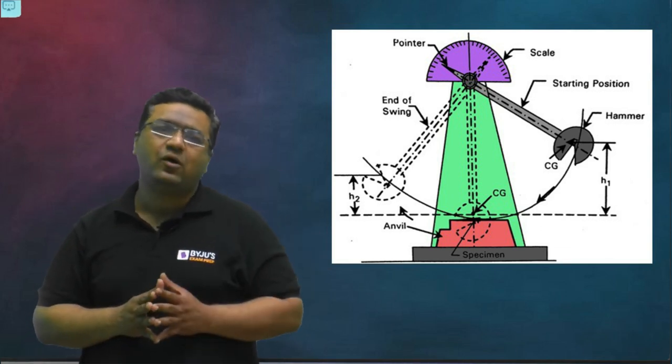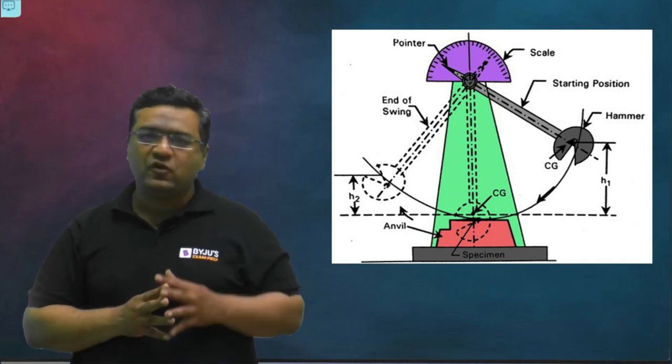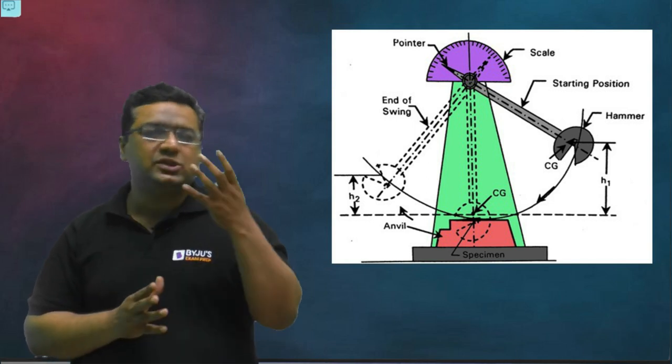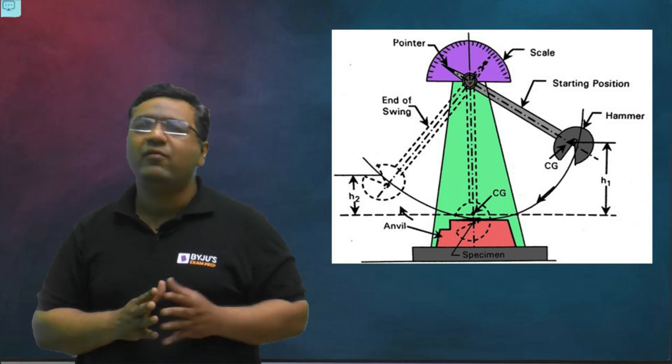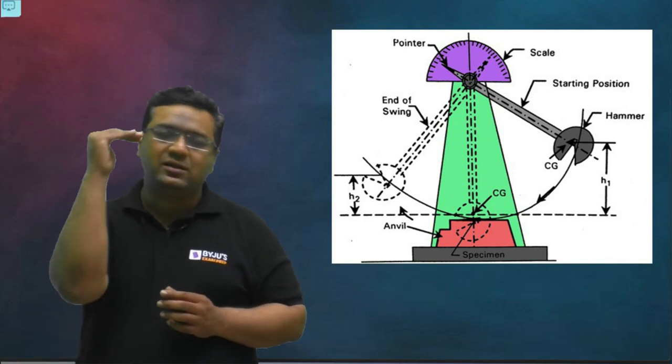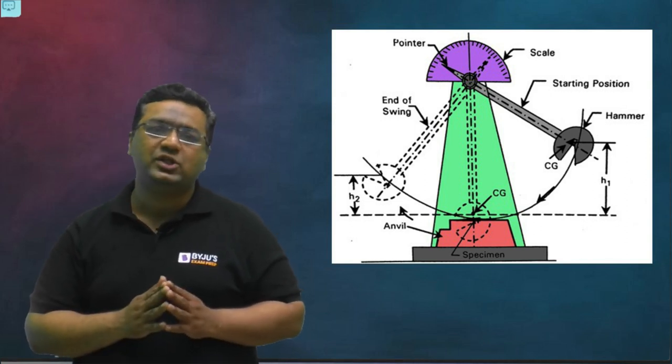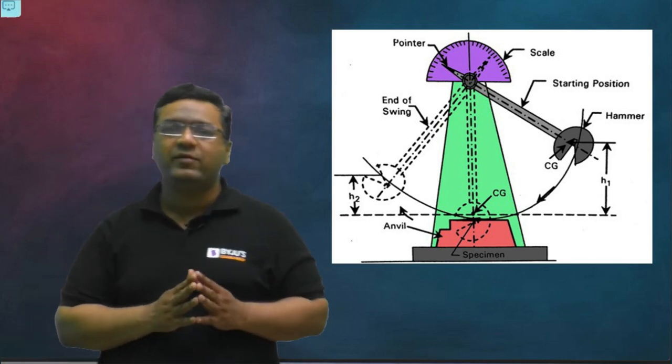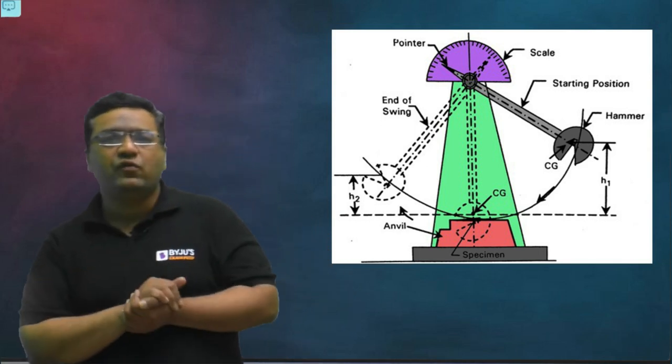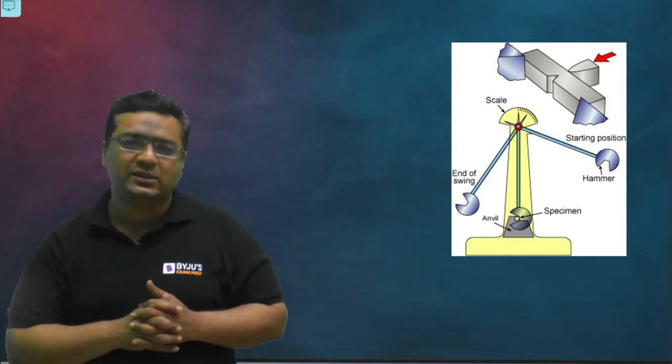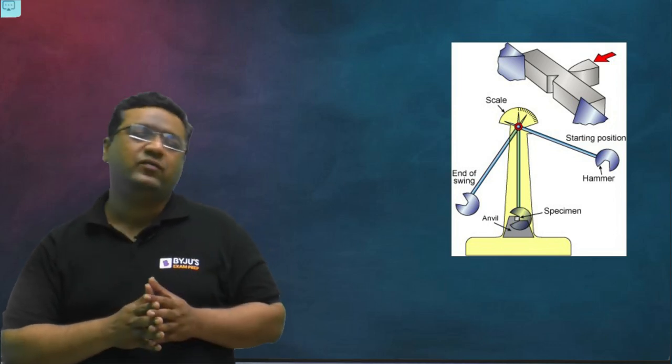After fracturing the component, that difference of height will tell us how much energy that hammer has lost. Because at first height it would be having some potential energy, at second height it would be having some potential energy. That loss of energy is absorbed by the component. Neglecting the air resistance and all, we can say that will be the toughness amount. That energy is said to be the toughness.